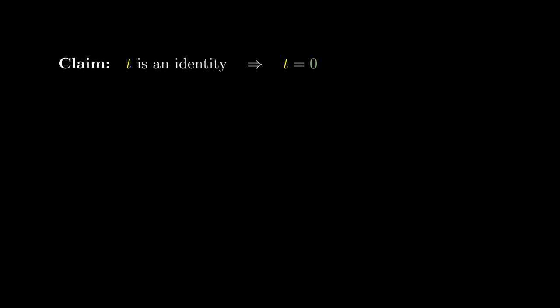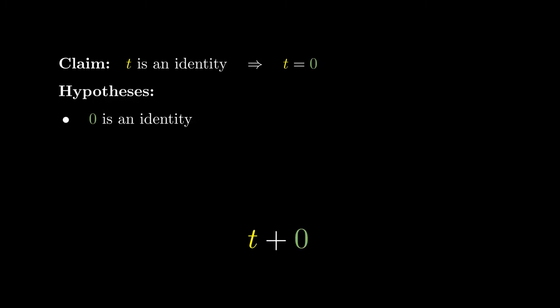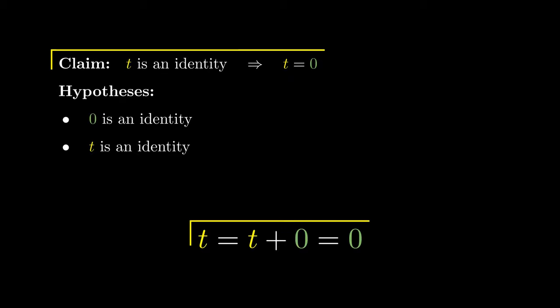To prove this, let's write out the expression t plus 0. We need to start with hypotheses, which are statements that we take to be true. In the integers, the number 0 is an identity, meaning that when we add 0 to any number, the result remains the same. However, in this claim, we assume that t is an identity. This means if we take t and add it to any number, the result remains unchanged, which is precisely what we aimed to prove.